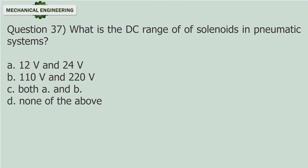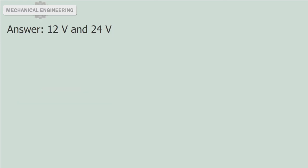Question 37: What is the DC range of solenoids in pneumatic systems? A. 12V and 24V. B. 110V and 220V. C. Both A and B. D. None of the above. Answer: 12V and 24V.